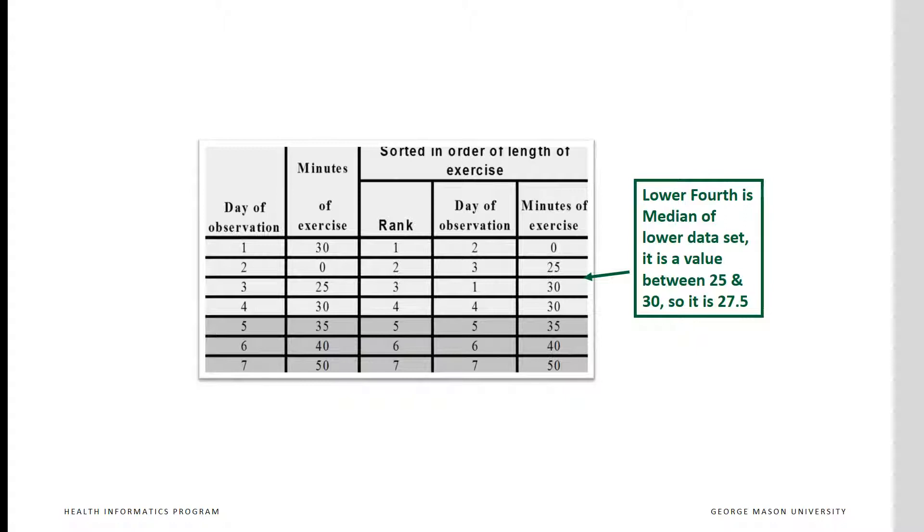Since median is an actual data point, we include this point in the lower data set to calculate the lower fourth. We calculate the halfway point for the first half of the data. When we include the median, we have four points in the lower data set. The 25 percent quartile is halfway between the second and third point. In other words, between 25 and 30, which is 27 and a half.